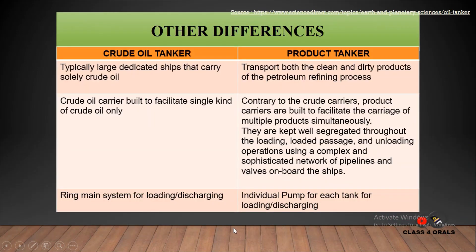Other differences: crude oil tankers are typically large and are dedicated to carrying solely crude oil, whereas product tankers are designed to transport both clean and dirty oil for the petroleum refining process. In a crude oil tanker, only a single kind of crude oil can be carried.